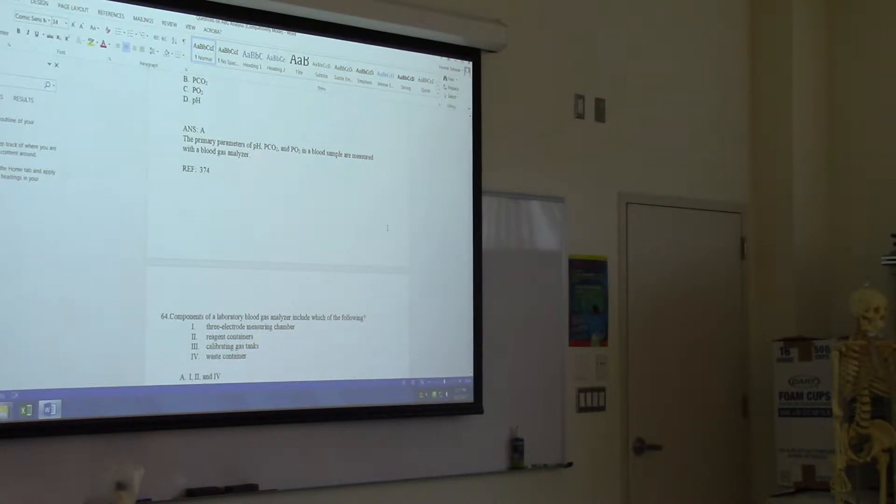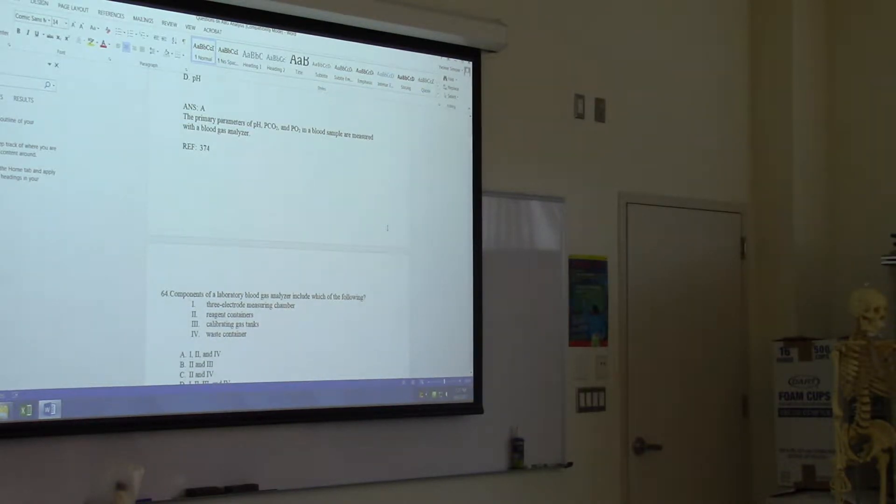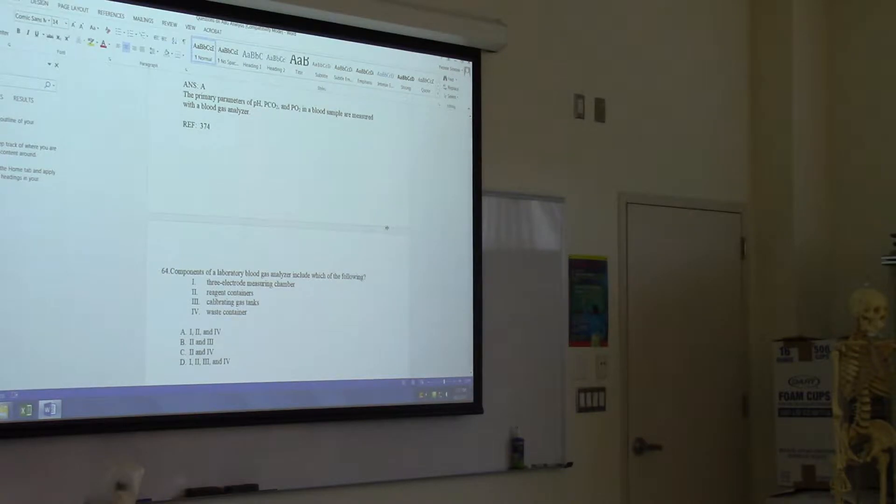Components of a laboratory blood gas analyzer include which of the following: three electrode measuring chamber, reagent buffer solutions, calibrating gas tanks, waste container. D, letter D.